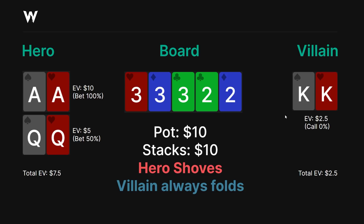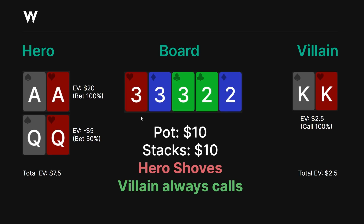King-king never calls, but queens still checks back half the time — which means a quarter of the time kings wins the pot, so the EV remains exactly the same at $2.50. Now, what if villain always calls? The expected value from aces increases from $10 to $20 because they're always winning villain's call, but the expected value of queens decreases to negative $5 because we're not getting any folds. These two will average out such that the total expected value is still $7.50. King-king still wins $2.50 because queens checks back half the time — not adjusting.